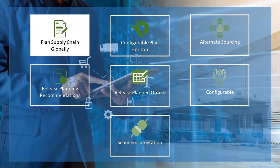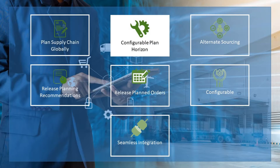Plan Supply Chain Globally: consolidate planning recommendations across organizations or within the organization, honoring vendor constraints and/or minimum order quantity, amount, and weight. Configurable plan horizon: model the plan horizon by suppliers based on lead times and material need date.